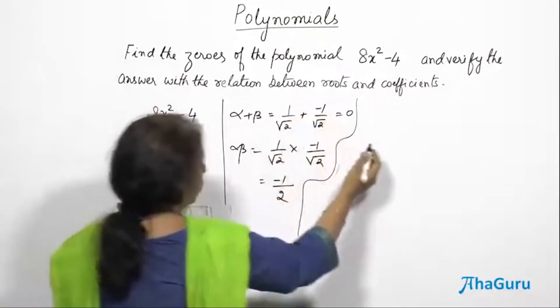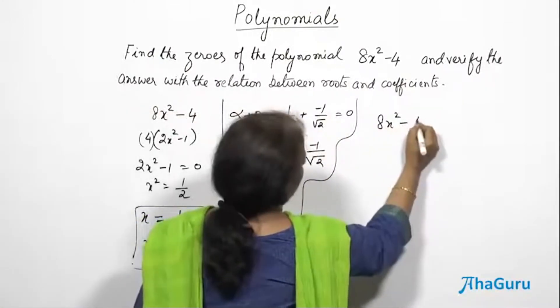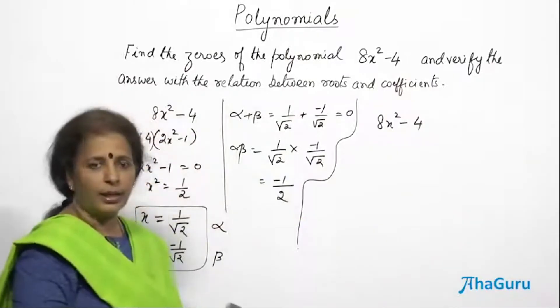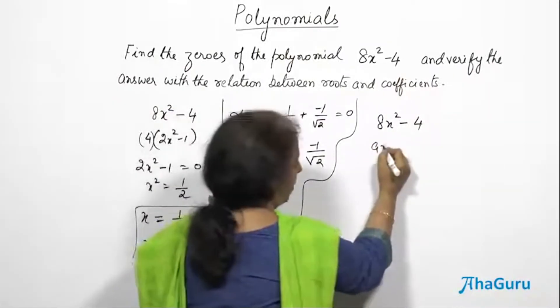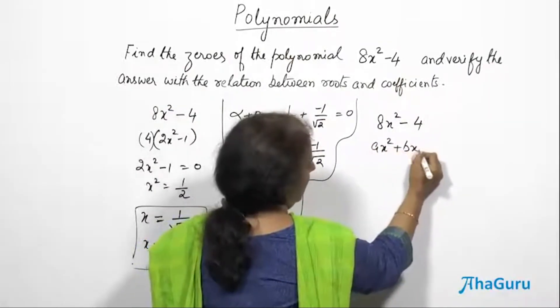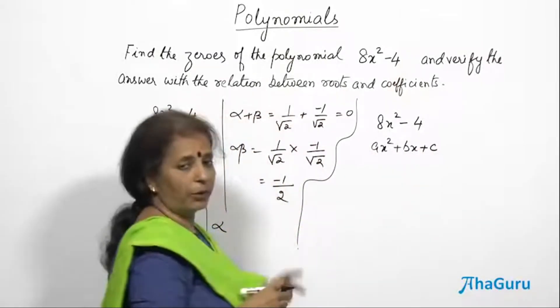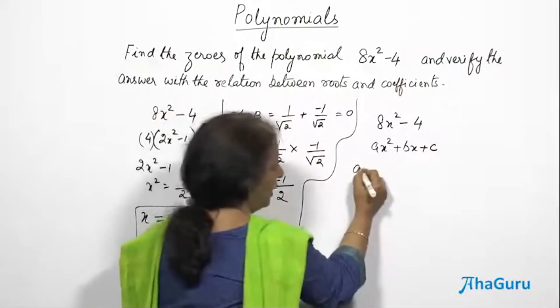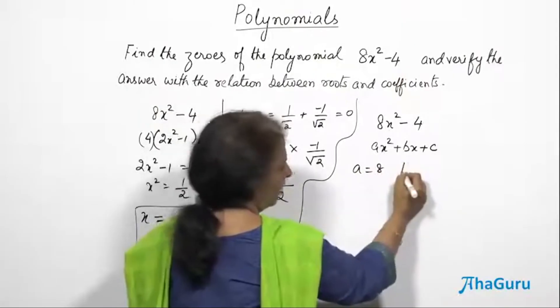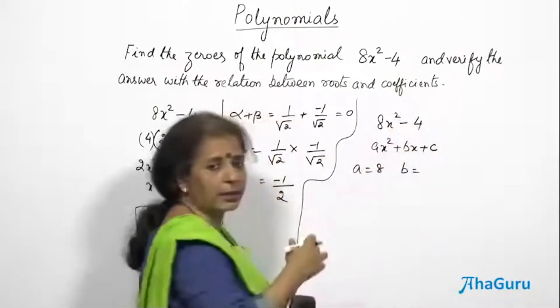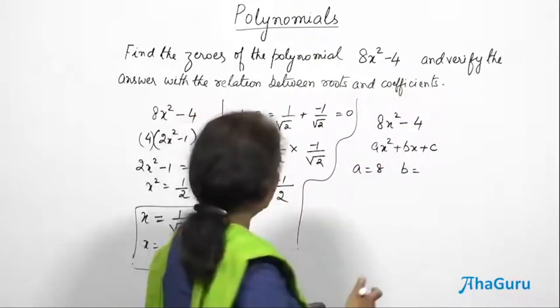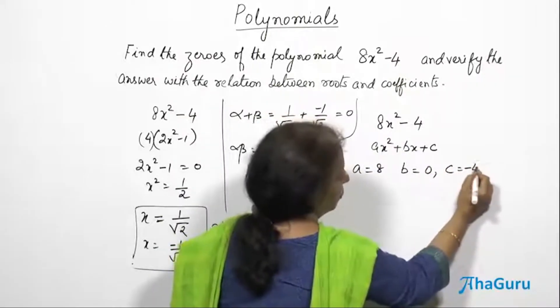Let us go to the polynomial 8x² - 4. This has to be compared with the standard form of ax² + bx + c. And from there, we can write a = 8, b = 0 since there is no x term there, and c = -4. Please be careful with the signs.